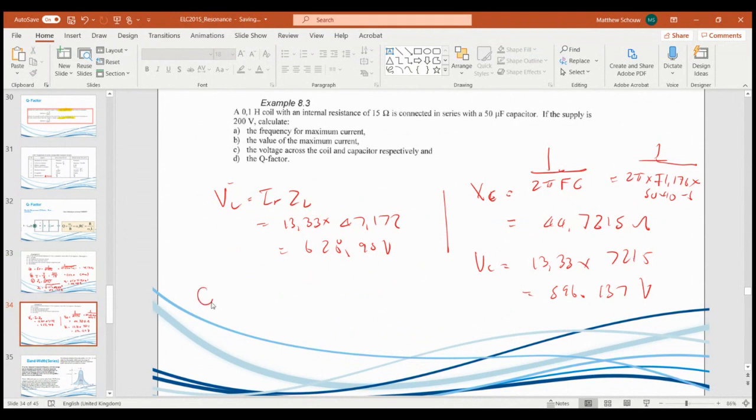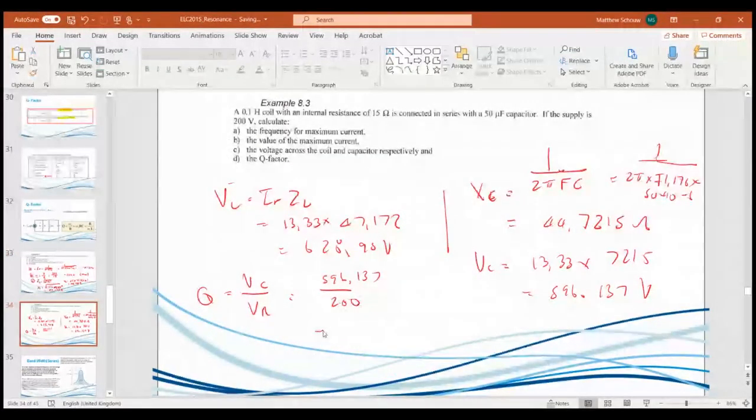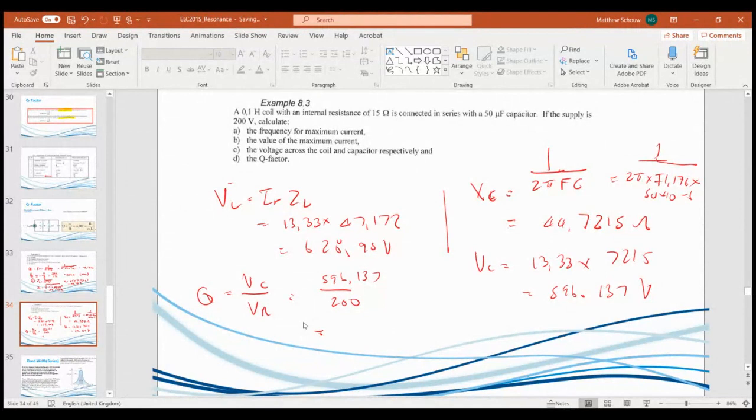If you typically, remember I said, what is Q? Q will be VC over V, the supply voltage. And that'll be 596.137 divided by 200. Let's quickly see, 596.137, which could be 2.980685. And obviously, we learned a new model, and that model is going to be Q is 1 over R times root L over C. So if you plug this in, you should get an answer close.